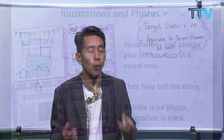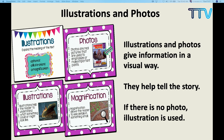Next, we have illustrations and photos. Photos are real pictures, and illustrations are just drawings. There are times when a photo was not available, so to help readers understand, you call a good illustrator who will illustrate the information. Both illustrations and photos are very important. They give information in a visual way. There are different types of learners — auditory, kinesthetic, and visual learners — and for visual learners, illustrations and photos become very helpful. The pictures can sometimes tell the story better than text. If there is no photo, illustration can be used.